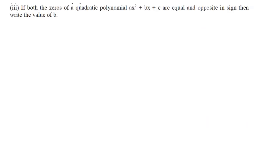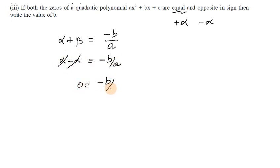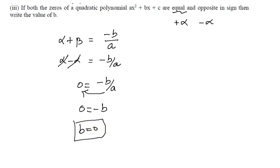Third subdivision: if both zeros of the polynomial are equal and opposite in sign, then their sum equals zero. Using the formula alpha + beta = -b/a, we get alpha + (-alpha) = 0 = -b/a, so b equals 0.